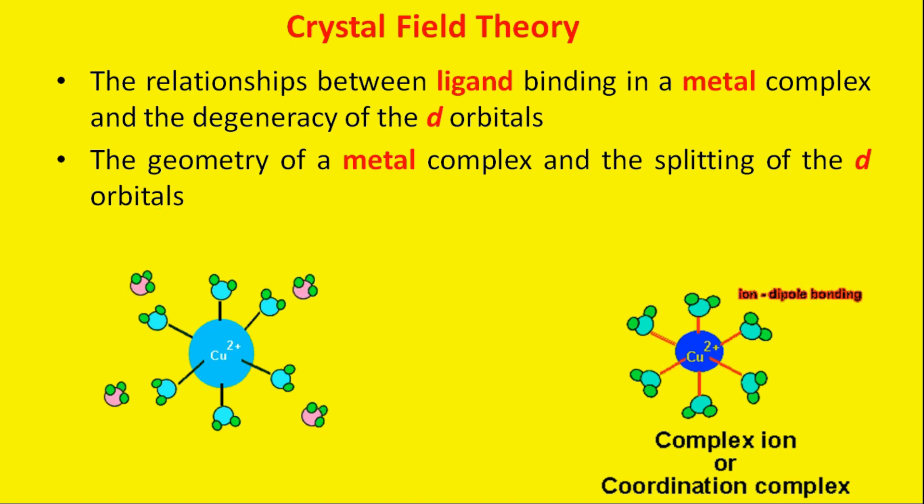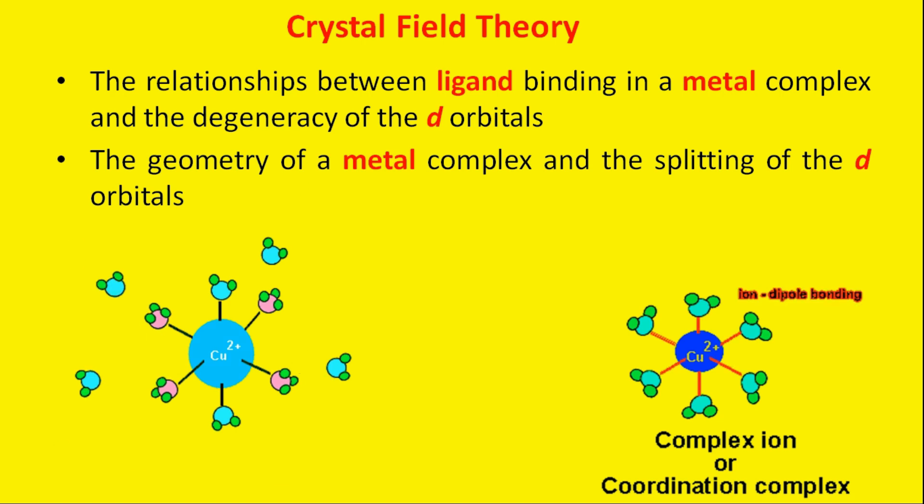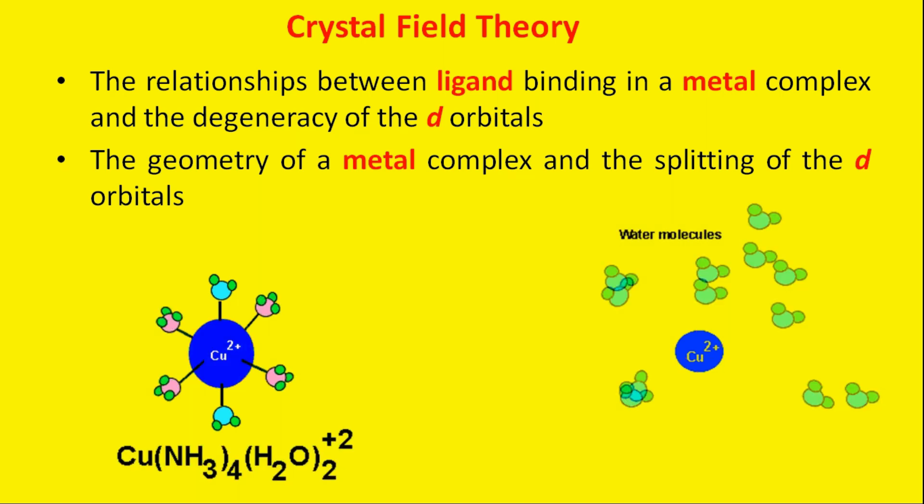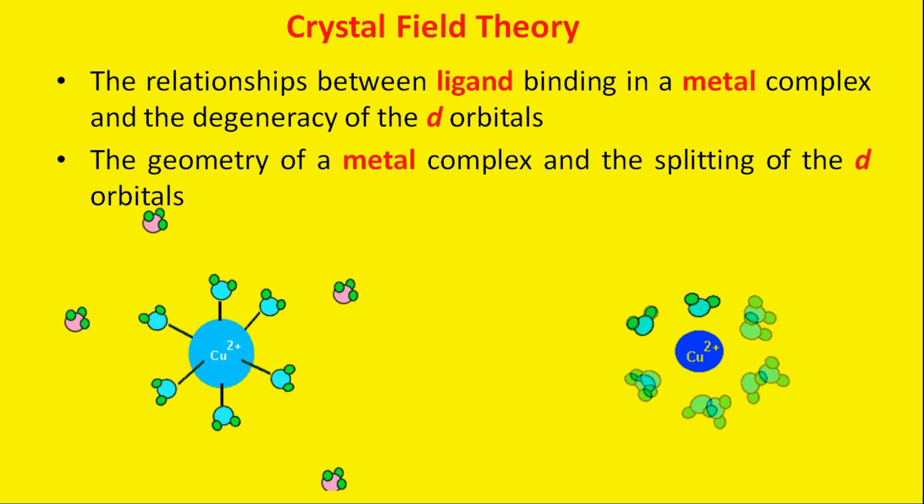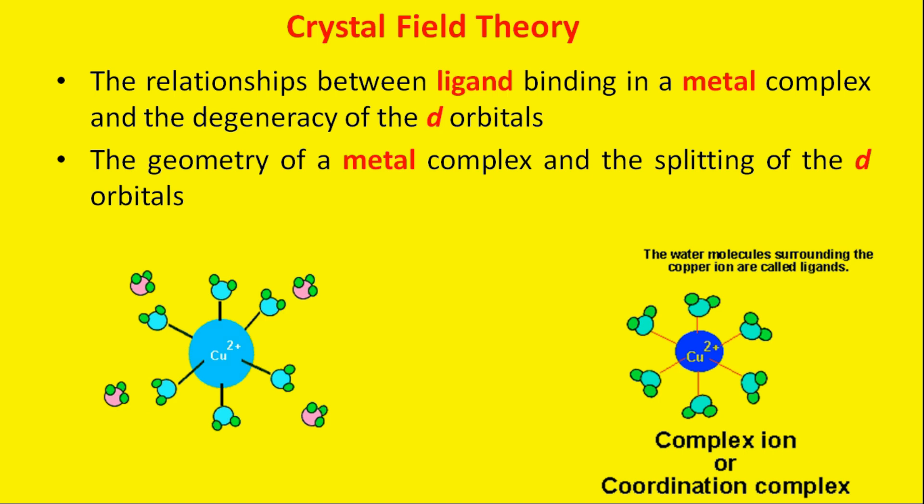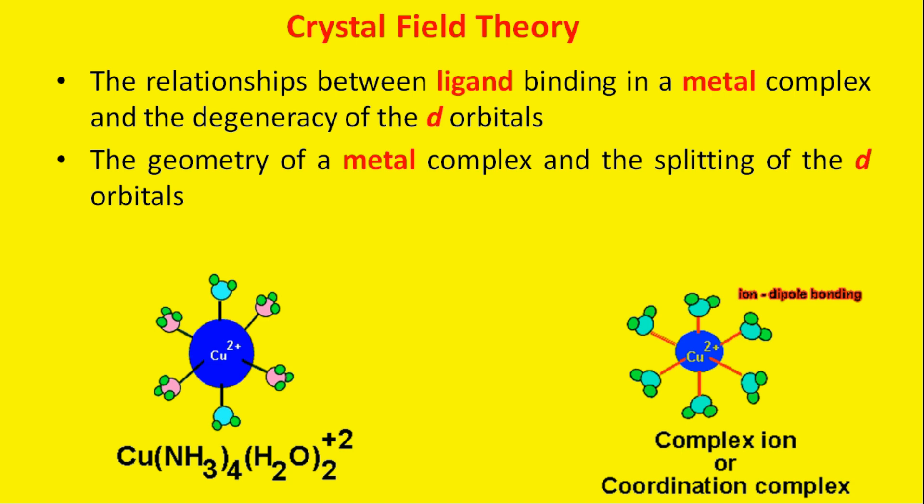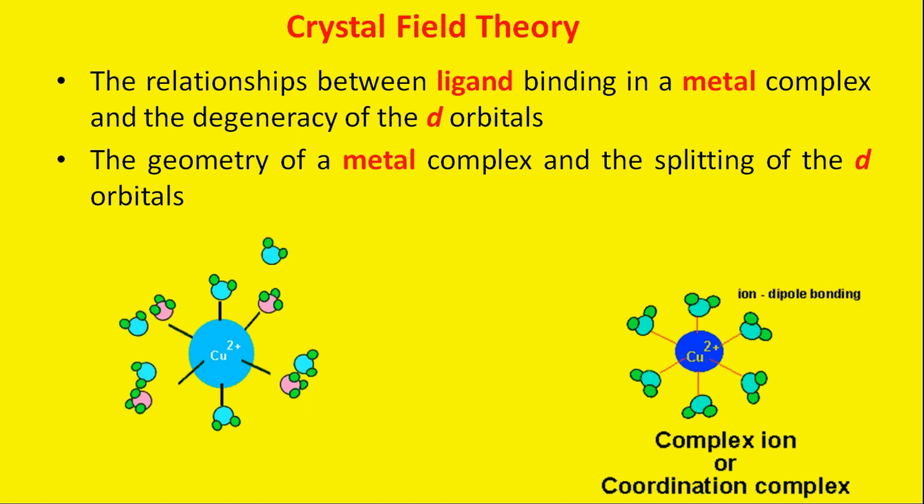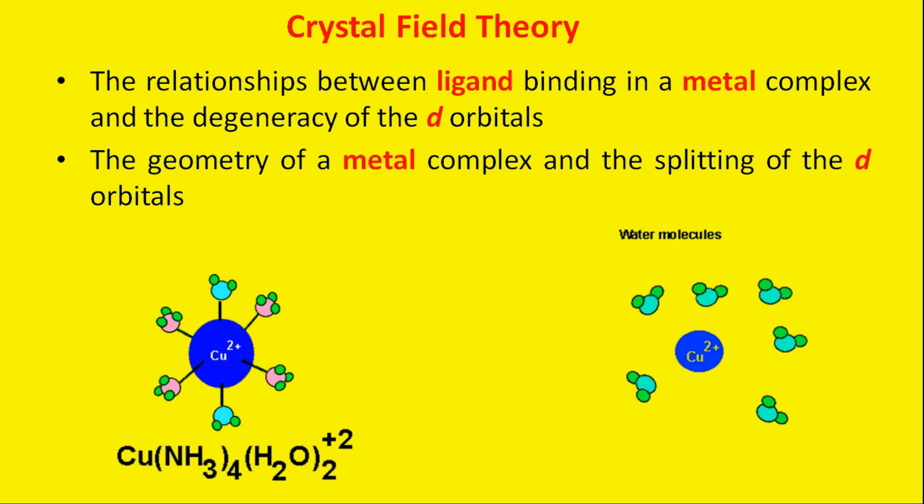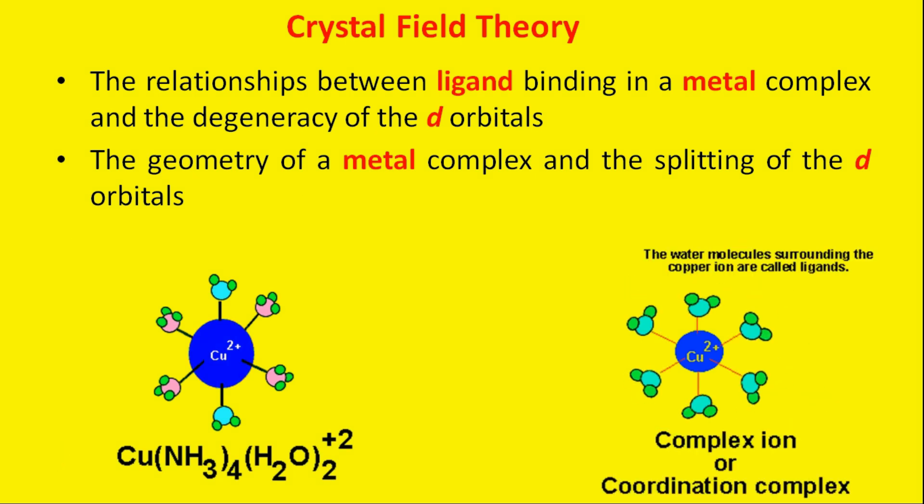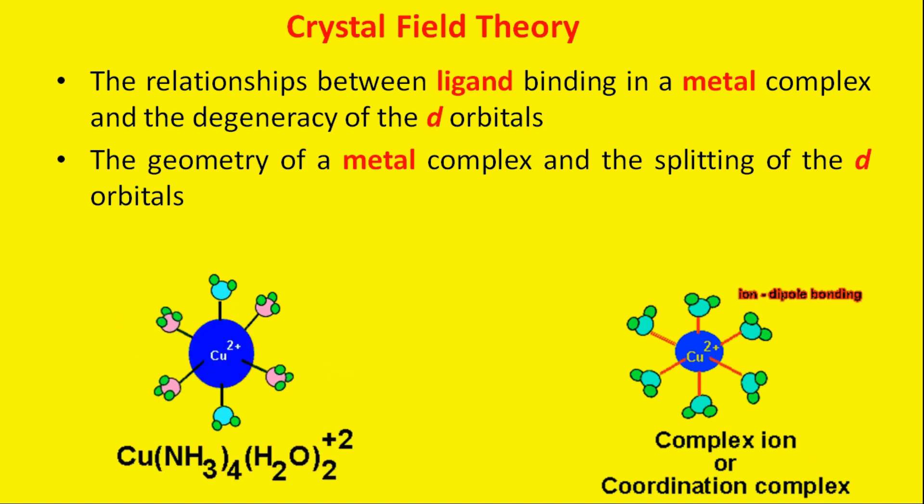Crystal Field Theory describes the breaking of orbital degeneracy in transition metal complexes due to the presence of ligands. Crystal Field Theory qualitatively describes the strength of metal and ligand bonds. Here you can see how the copper is surrounded with the ligands, the water molecules. Here you can see the animation. Based on the strength of the metal ligand bonds, the energy of the system is altered.